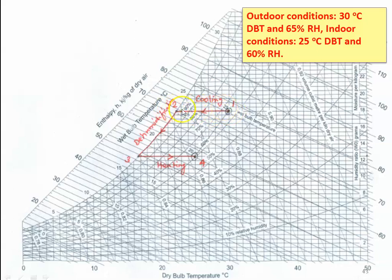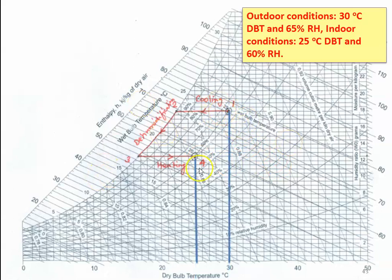How is this achieved? First there will be sensible cooling to reduce the temperature to the saturation temperature. Once the air reaches saturation temperature and you further cool, there will be dehumidification — water vapor is removed. This occurs in the dehumidifier. Then we heat the air again to achieve the required indoor condition. So the process is: 1 to 2 is cooling, 2 to 3 is dehumidification, and 3 to 4 is heating.